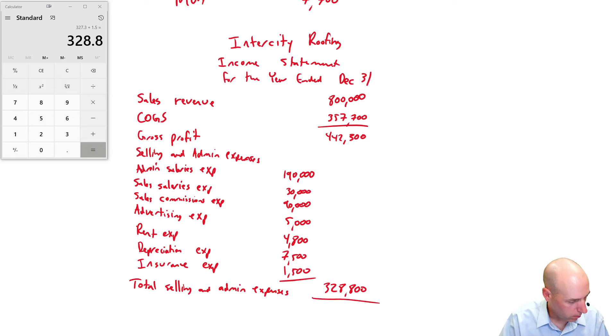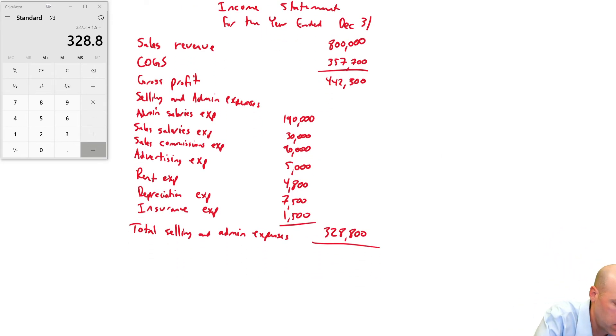$328,800 for my total selling and admin expenses. All right, we're almost home. We're going to need another subtotal. We take our gross profit. We deduct our selling and admin expenses for $442,300 minus $328,800. And we get $113,500. This would be either our operating income or if we know all we have is taxes left and that's all we've got, it's income before taxes.